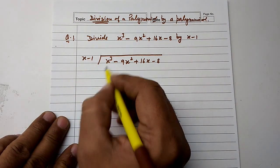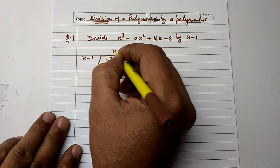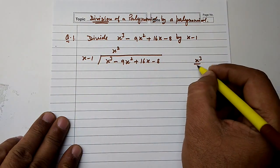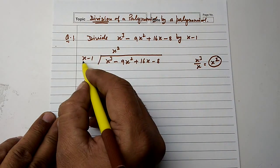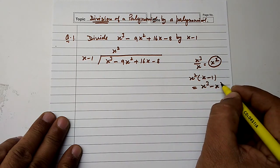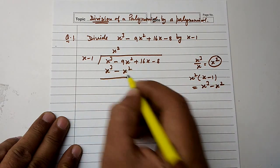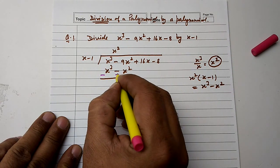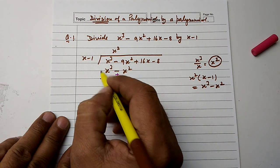Now we will multiply x with a number to get x cube. We multiply x cube by x, giving x cube minus x square. Then we will change the sign — negative will become positive.